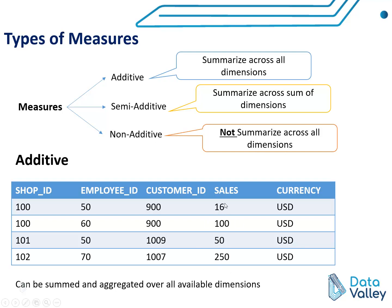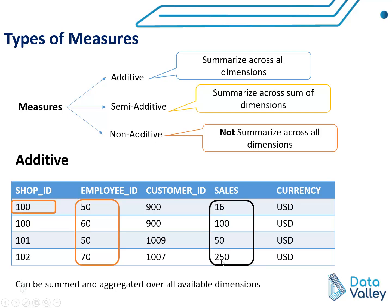In additive measures like sales, we can perform any aggregation operation across all dimensions. For example, we can aggregate sales per employee ID — such as the total sales for employee 50 or 60, or find which employee achieved the maximum sales. We can also aggregate sales over a shop dimension, finding the shop with maximum or minimum sales, or aggregate sales over all shops. So we have performed aggregation over the sales measure paired with the employee dimension and the shop dimension.